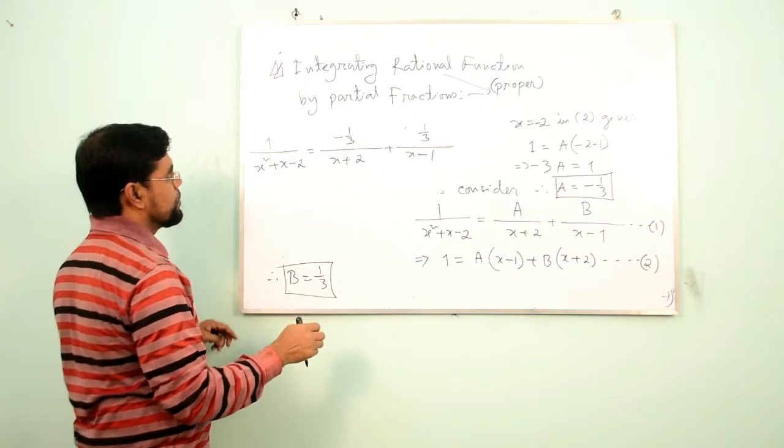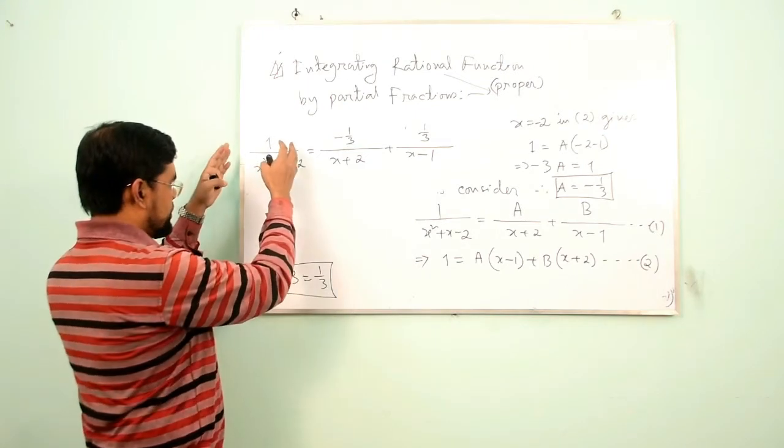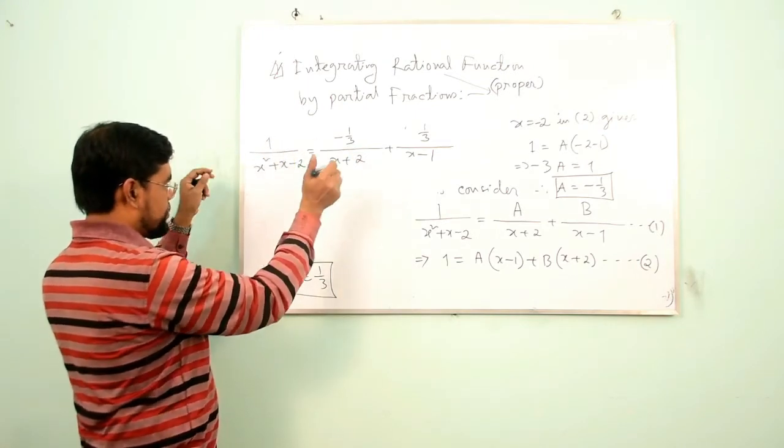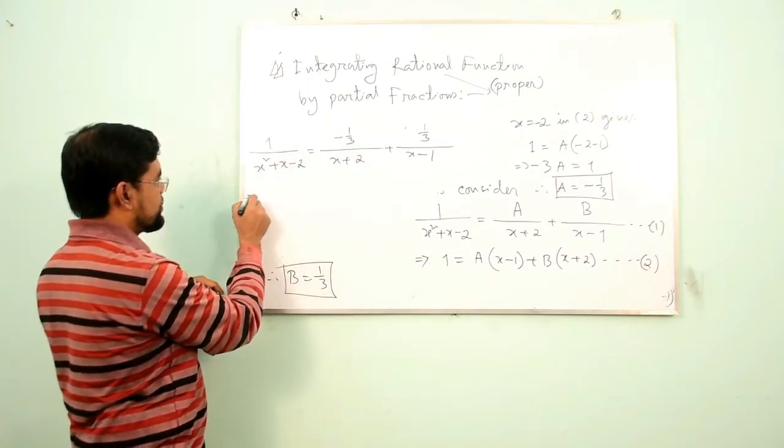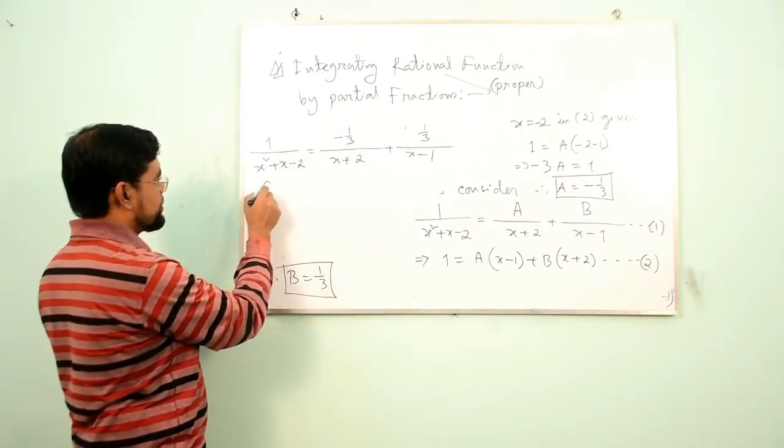Putting the values of A and B into Equation 1, we get: 1/(x² + x − 2) = (−1/3)/(x + 2) + (1/3)/(x − 1). Now we want to integrate both sides with respect to x.